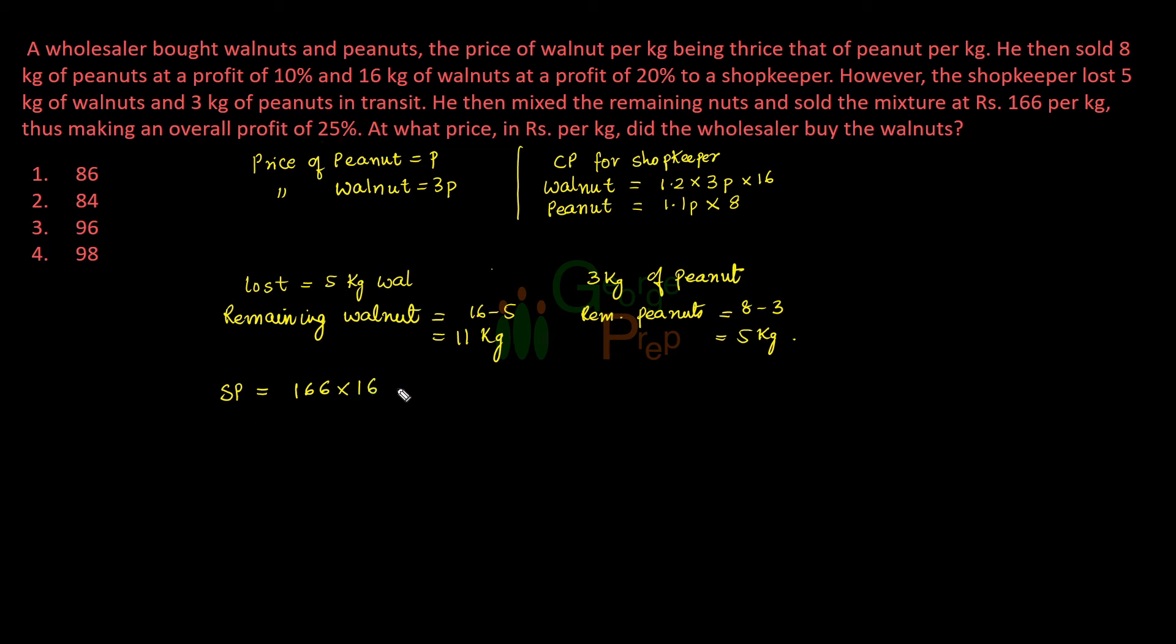So this gave him a profit of 25% over CP. So this SP is cost price plus 25% of the cost price that he incurred, or we can directly write 1.25 of cost price. Now instead of cost price, I can just take his total cost price from here. So we know how much he incurred for walnut and peanut. We can add that and replace CP with that value.